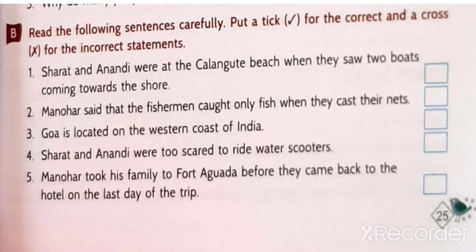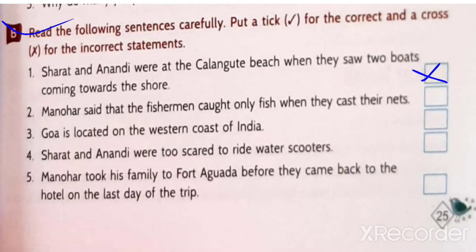Now let's do the exercise. Read the following sentences carefully. Put a tick for the correct and a cross for the incorrect statements. So let's start. Sharath and Anandiv were at Kalanguid Beach when they saw two boats coming towards the shore - this is wrong. They all were at Baga Beach.